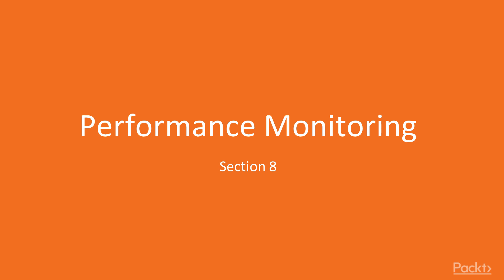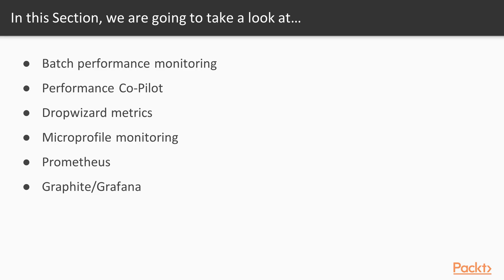In this section we are going to take a look at common performance monitoring tools — tools for Java batch performance monitoring, Performance Co-Pilot, as well as Java bindings like Bufret, Drop Wizard Metrics, monitoring tools like Metrics or Health Check of Eclipse MicroProfile, and the Prometheus tool that allows sharing and distributing monitoring data, plus alternatives like Graphite or Grafana.